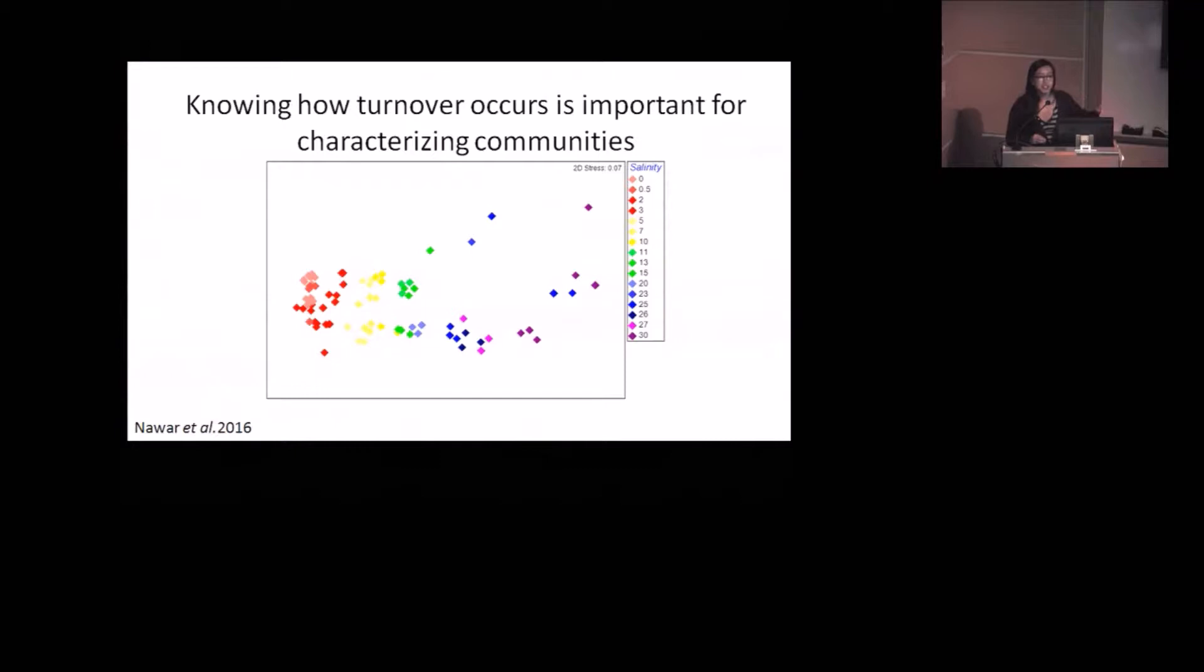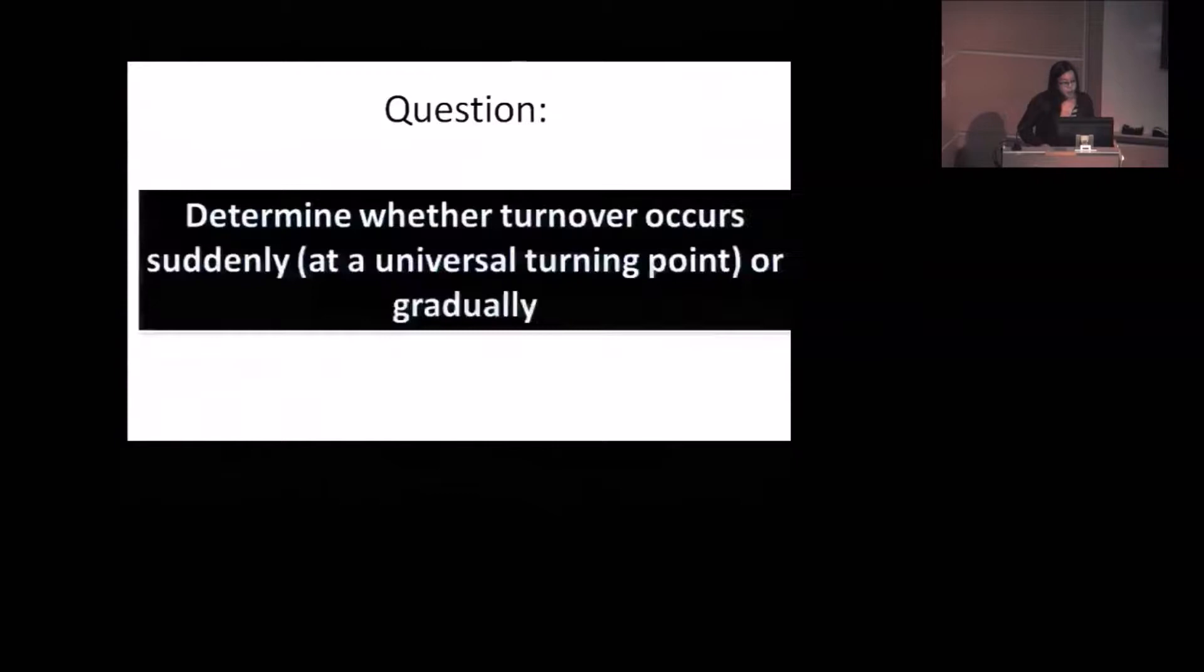We wanted to know how turnover occurs for these communities because it's important to understand how the taxonomy changes along salinity gradients and how that might potentially relate to function. Perhaps also if you were to compare communities, you want to know where to divide them up. So at what point along a salinity gradient do you characterize something as a freshwater specialist? When do you characterize it as a marine water specialist? The main question we wanted to ask was whether turnover occurs suddenly at some kind of universal turning point or if it did gradually one taxon at a time.